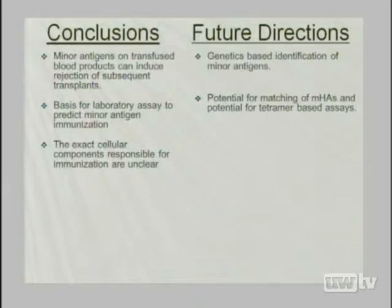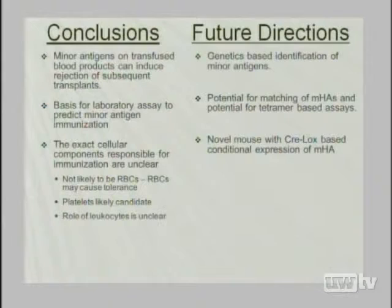It's also possible this pathway is present in solid organ transplantation, where the minor antigen would have to be matched on both the transfused blood and the organ. Blood group antigens are expressed on different organs, so that's an open question. The exact cellular components responsible for the immunization are not yet clear — our current thinking is it's not the red cells and it's likely the platelets. We're very close to completing a mouse that uses Cre-lox technology for conditional expression of model antigens on different cell types.